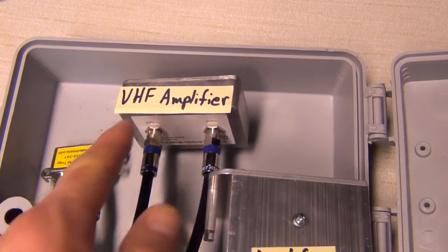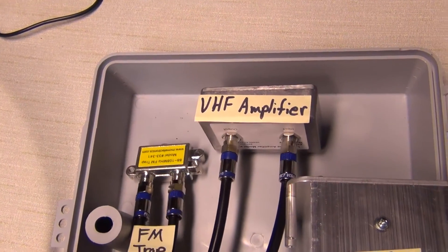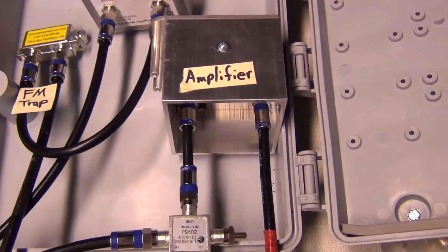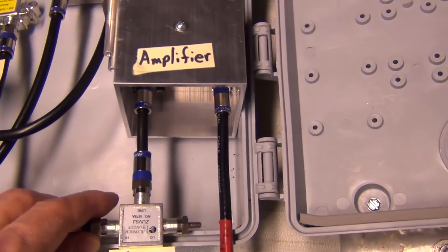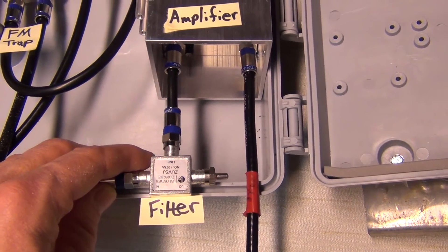And then the VHF amplifier doesn't have an FM trap, so that's what this is right here, that goes to that. And this one I'm using this as my FM trap and also my filters out the VHF signals too, so it's basically from DC to up to the UHF channel.